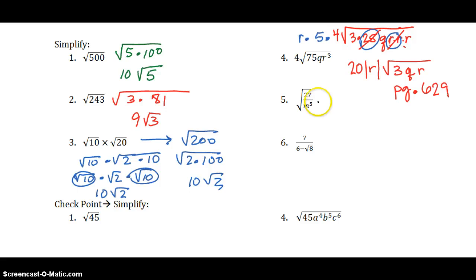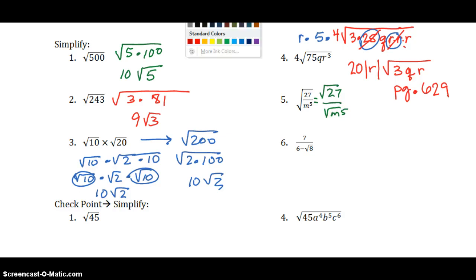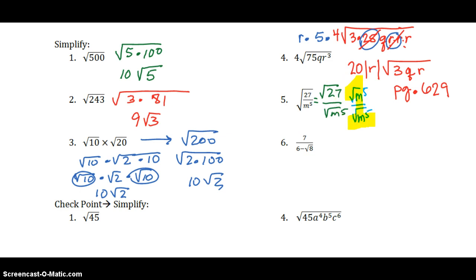For number 5, we need to rationalize the denominator. We have the square root of 27 over the square root of m to the 5th, and you cannot have a square root in the denominator. So we need to multiply by the square root of m to the 5th over the square root of m to the 5th. That is equal to 1, so I've not changed any values. When you multiply the square root of m to the 5th times itself, you get m to the 5th — so I'm finished with my denominator.